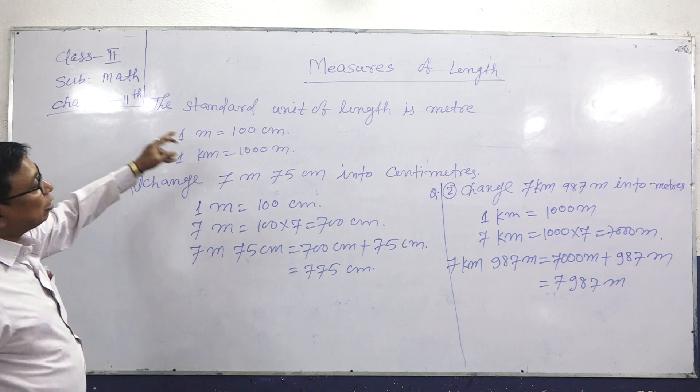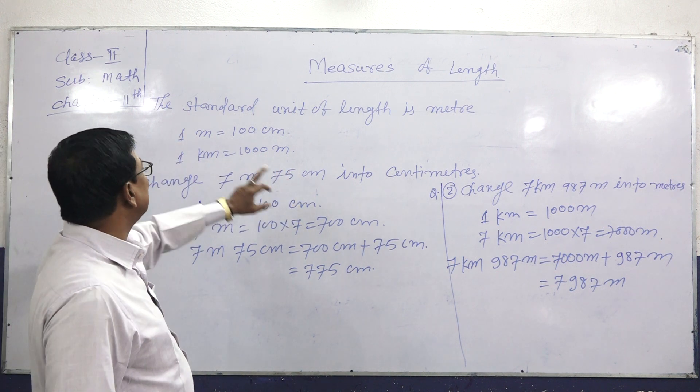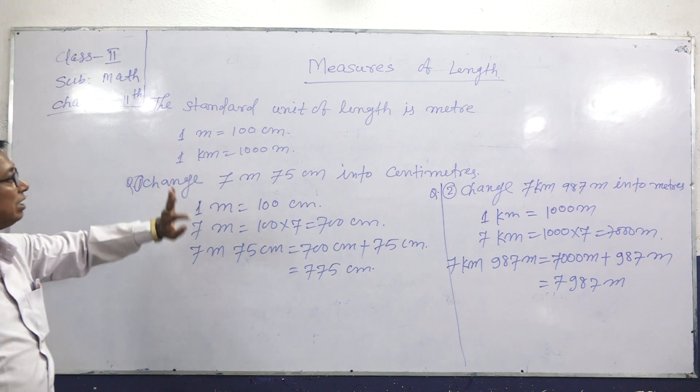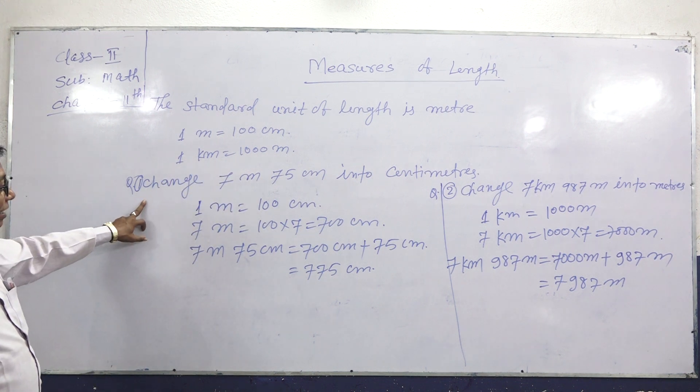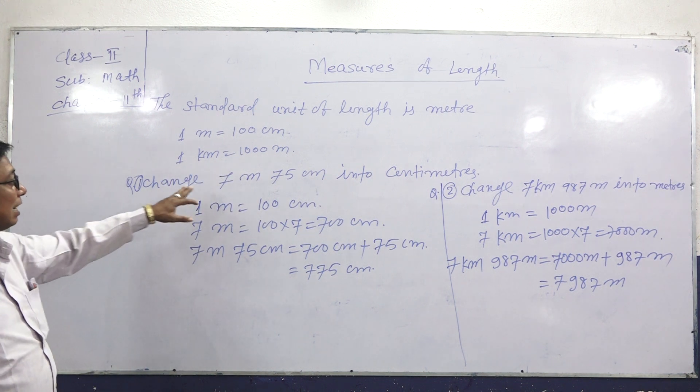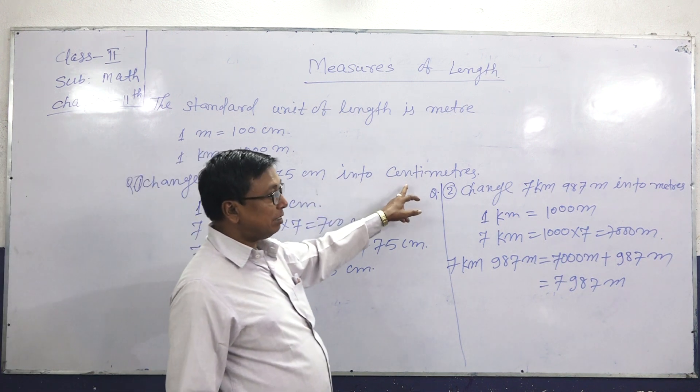The standard unit of length is 1 meter. 1 meter equals 100 cm, or 1 kilometer equals 1000 meters. For example, 75 cm equals 100 meters.